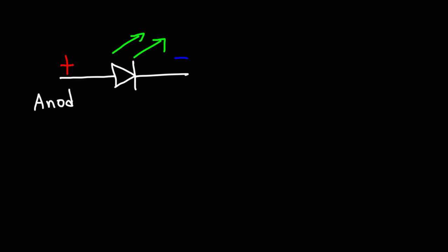Here is the electrical symbol of a regular diode. To draw the electrical symbol of a light-emitting diode, simply put two arrows emanating away from it. On the left side, we have the positive terminal, and on the right side, the negative terminal. So the positive terminal is the anode of the LED, and the negative terminal is the cathode.